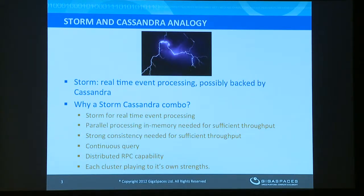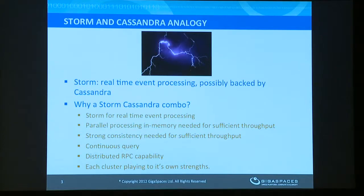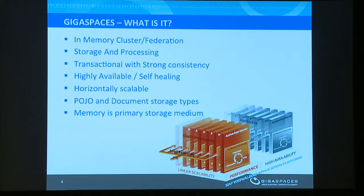The idea is pretty simple. To give an analogy, take the integration of Storm with Cassandra to store state. Storm is a stream processing system that uses Cassandra for persistence. It does parallel processing, needs strong consistency, implements continuous query, and distributed RPC. Each cluster plays to its own strengths, and most of these properties are present in GigaSpaces as well, although GigaSpaces is a more general-purpose product, not focused on stream processing in particular.